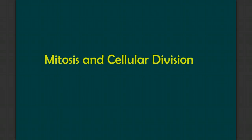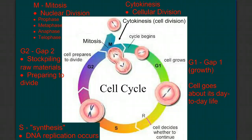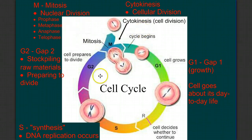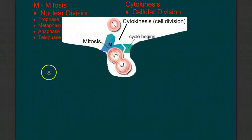Welcome to our video on mitosis and cellular division. In our last video, we discussed the cell cycle and the controls on growth in healthy cells, as well as what happens when cells lose their ability to recognize their growth regulators. We mentioned mitosis and cytokinesis as part of the cell cycle, and in this video we'll focus on the details of these two processes.